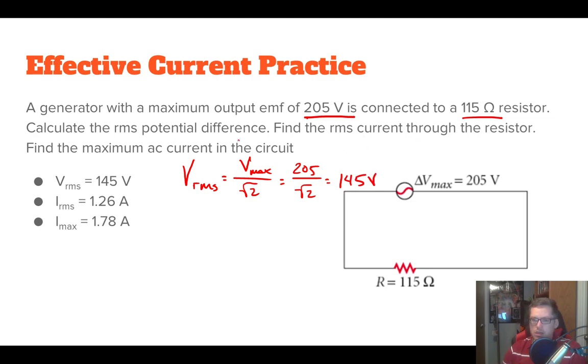Cool. Now it says find the RMS current through the resistor. Well, the RMS current will use the V_RMS because we know V equals IR. So that means I is equal to V over R. All right. So we can use our new V value, which is the 145 divided by current, which is 115. Multiply those together and you'll get 1.26 amps.